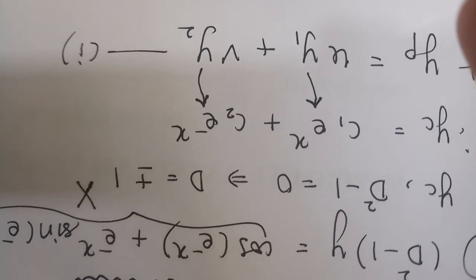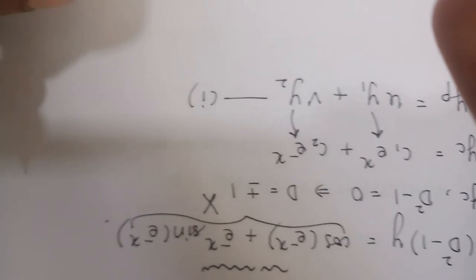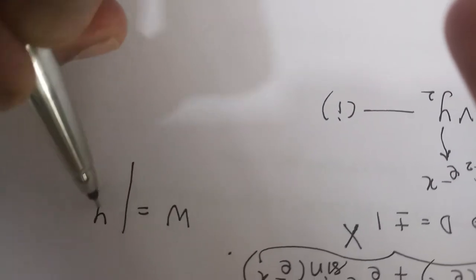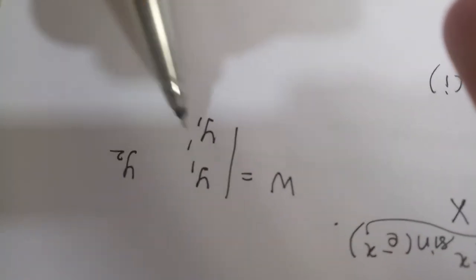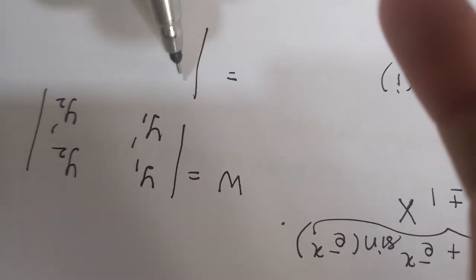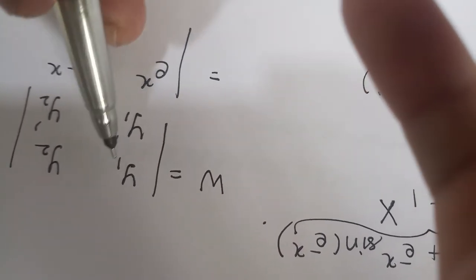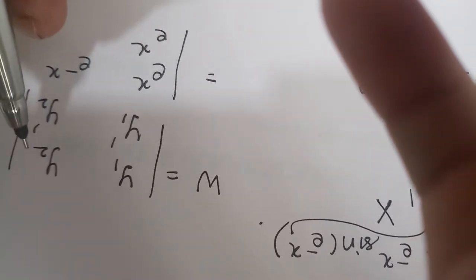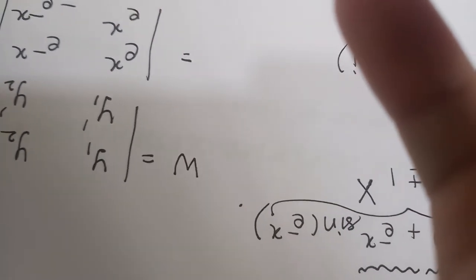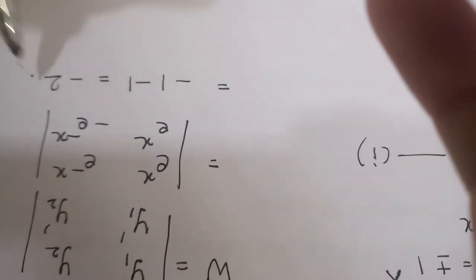Before finding u and v, we need to find something called W, the Wronskian. W is the determinant of y1, y2, y1 dash, y2 dash. That means it is the determinant of e raised to x, e raised to minus x, and their derivatives e raised to x and minus e raised to minus x. When you multiply this out, you get minus 1 minus 1, which equals minus 2.